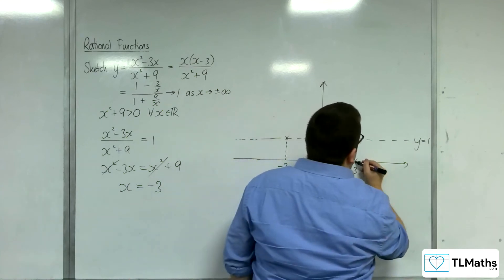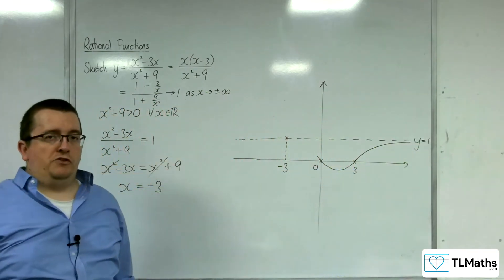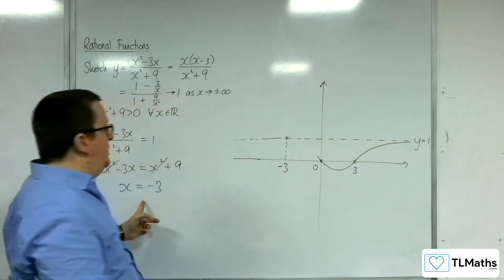So we're going to have to tend towards y = 1. We can't cross the horizontal asymptote over here because there's only one point of intersection.